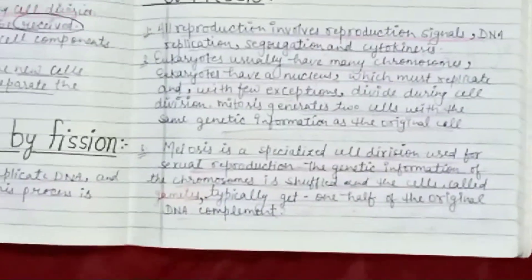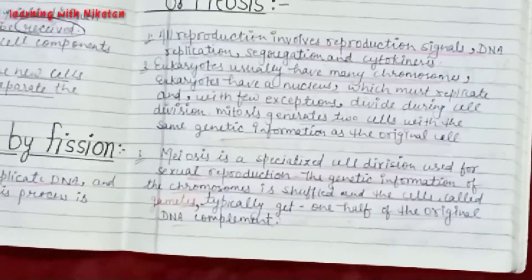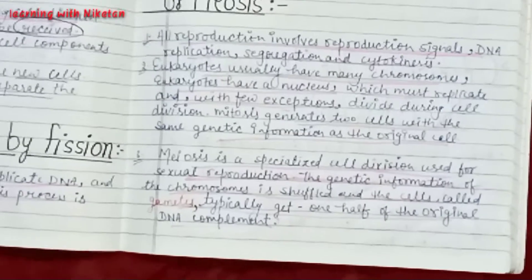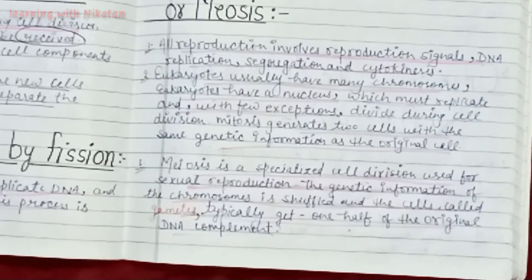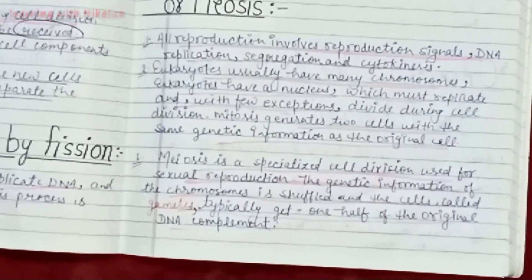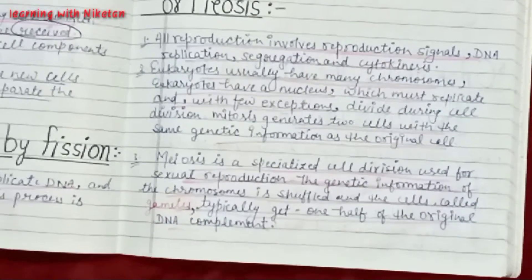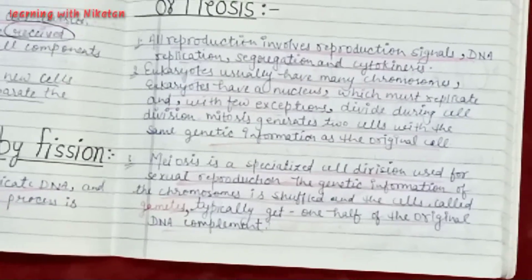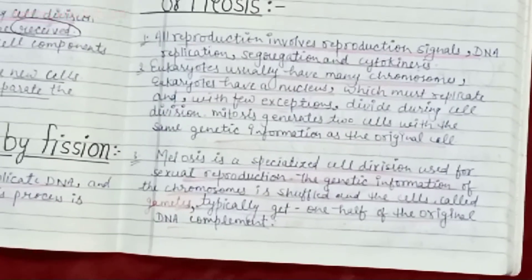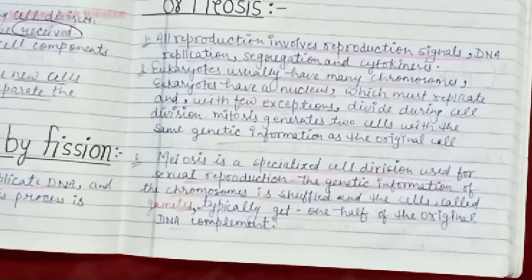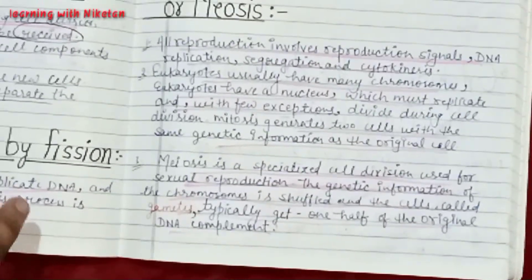Meiosis is a specialized cell division used for sexual reproduction. The genetic information of a chromosome is shuffled and the cells called gametes — which typically get one half of the original DNA complement.